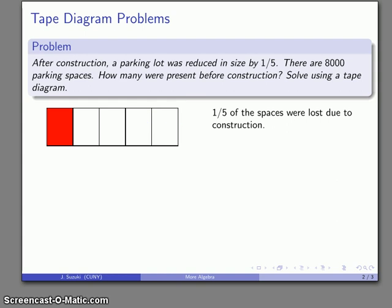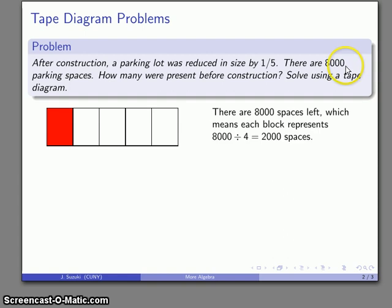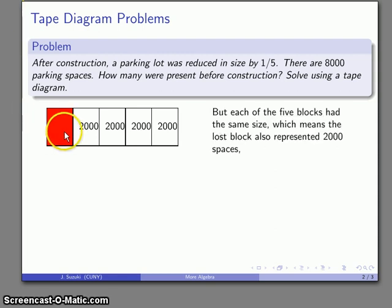Now we're told that there's 8,000 parking spaces, so that means that if these represent 8,000 spaces, then each of these blocks represents 2,000 spaces. And also, because we divided the parking lot into five equal pieces originally, this block here also represents 2,000 pieces.